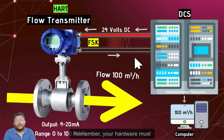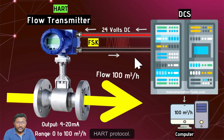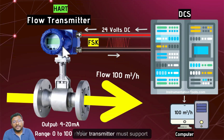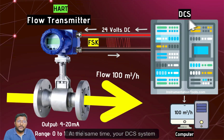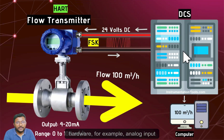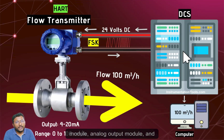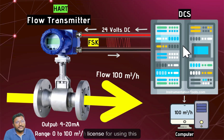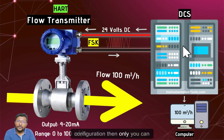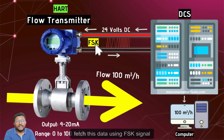Remember: your hardware must support HART protocol. Your transmitter must support HART signal transmission, and at the same time your DCS system hardware — for example the analog input module and analog output module — must also support HART protocol signal. At the same time you must have a software license for using this HART signal configuration. Then only you can fetch this data using the FSK signal.